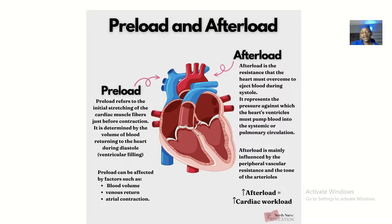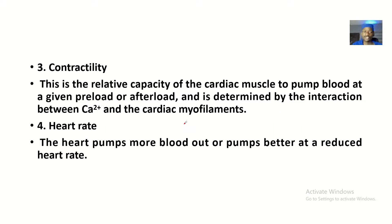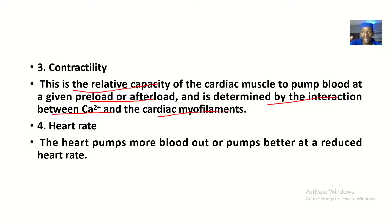Then there's contractility — preload is filling of the ventricles, afterload is sending blood into systemic circulation. Contractility is the relative capacity of cardiac muscles to pump blood at a given preload or afterload, and it's determined by the interaction between calcium and the cardiac myofilaments. That's why calcium channel blockers can be used for hypertension — calcium is needed for heart muscle contraction. Contractility looks at the rate at which the heart is contracting, essentially the work the heart is doing. If the heart is contracting more, oxygen demand will be more.